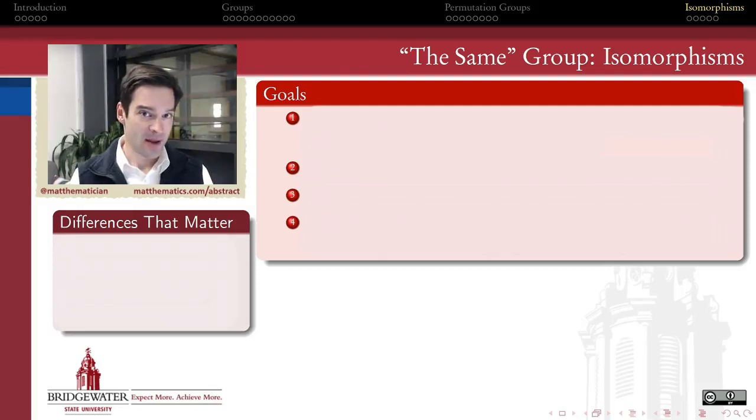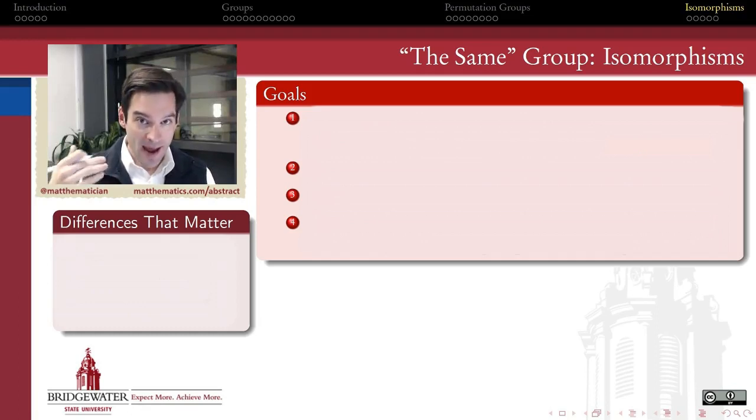This might come as a surprise, but the job of a mathematician is not necessarily to study numbers so much as it is to study structures. In other words, mathematicians need to have the ability to look past differences that don't matter to be able to see the differences that do.